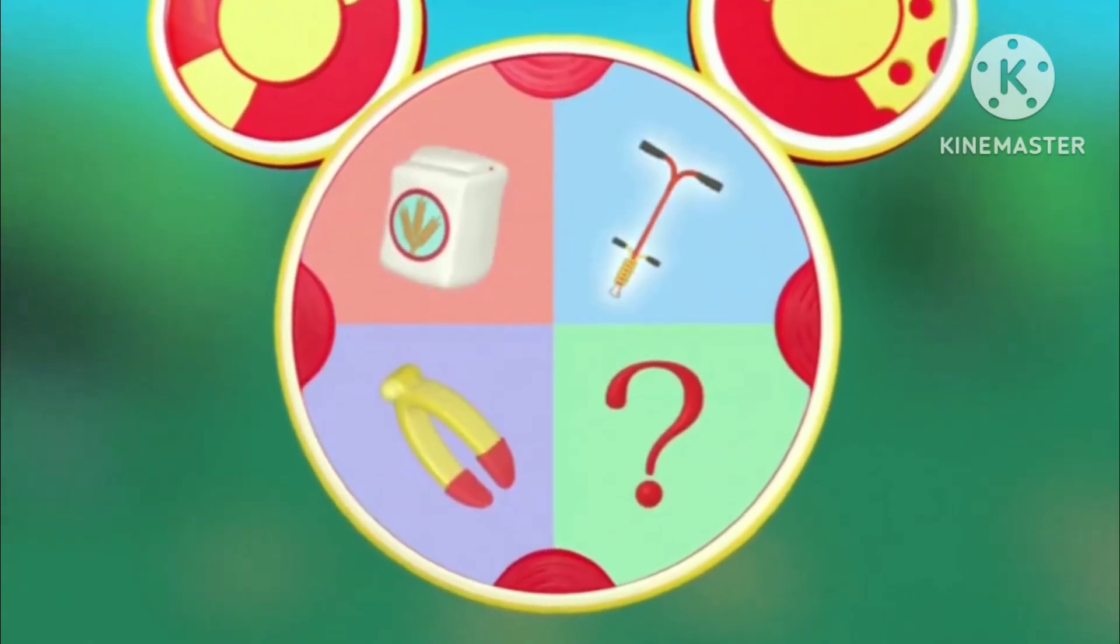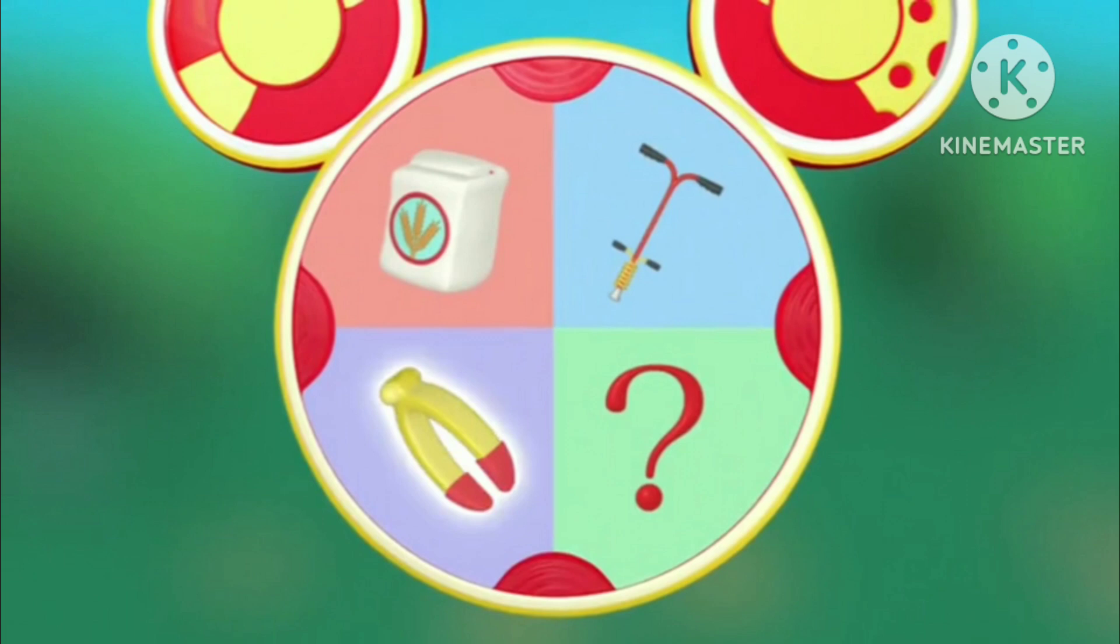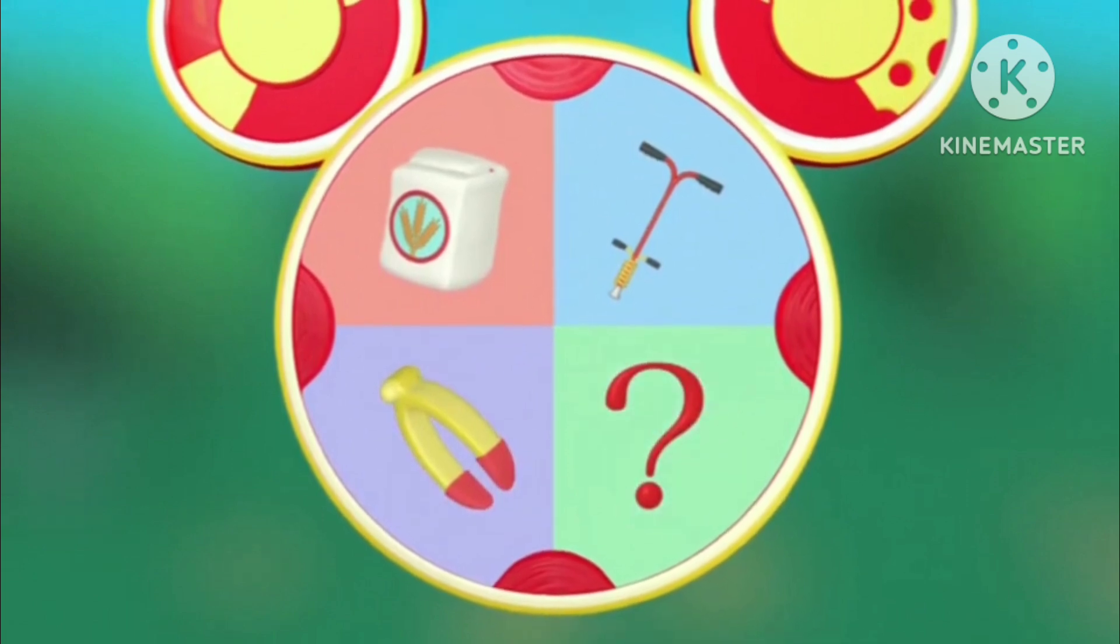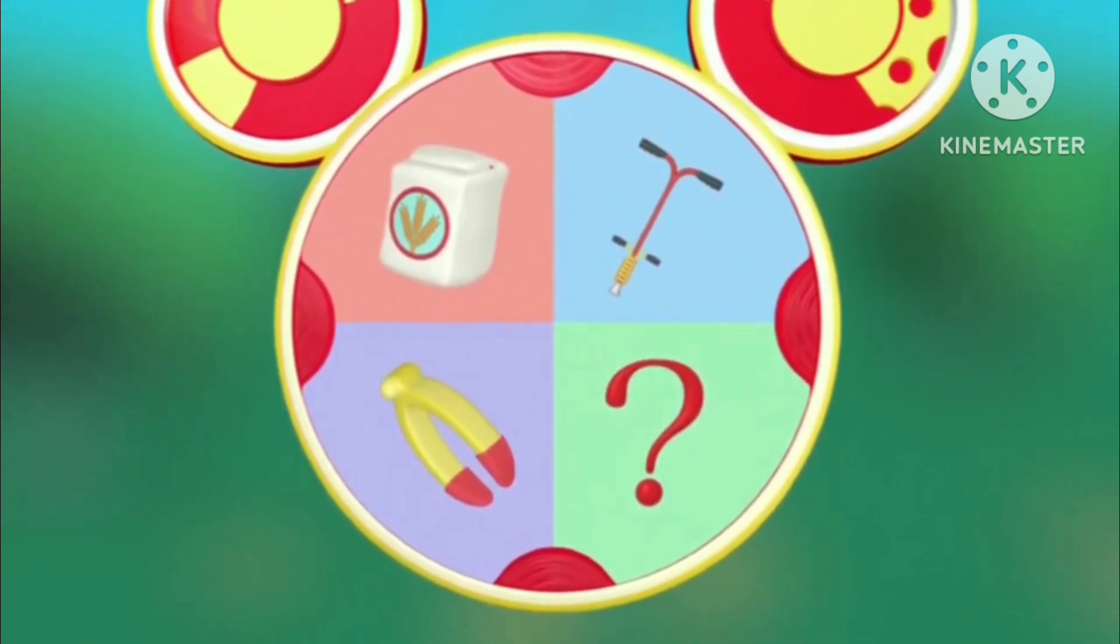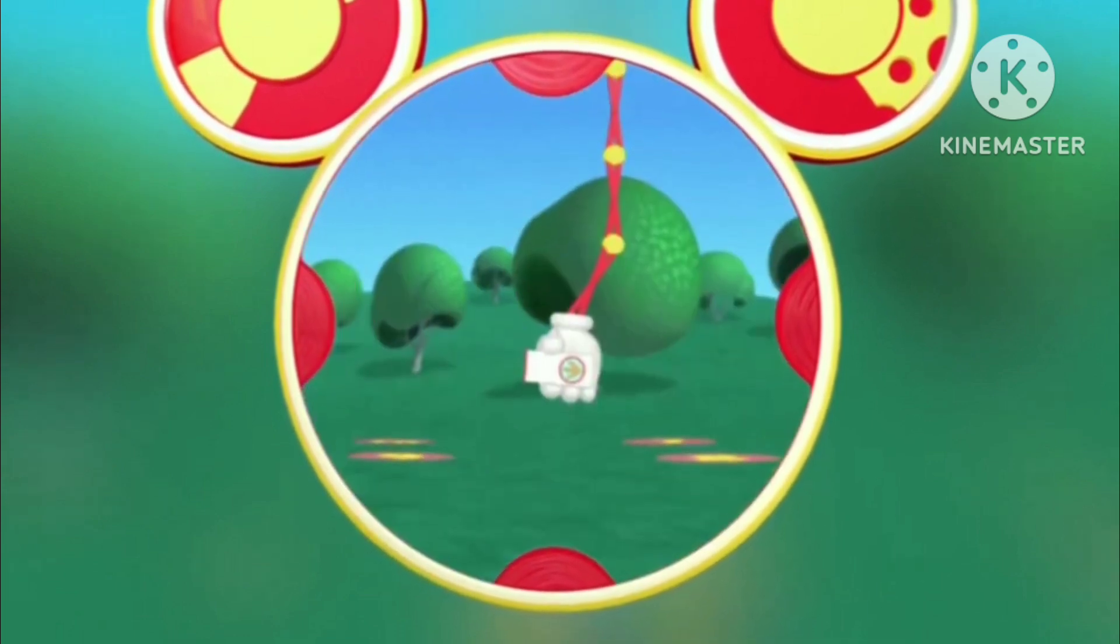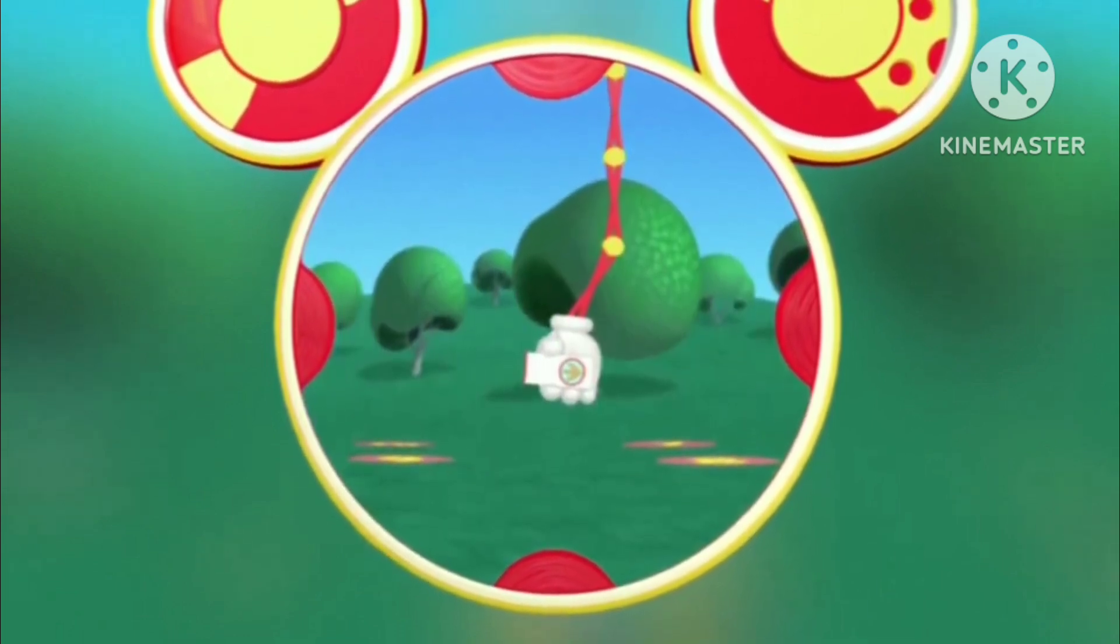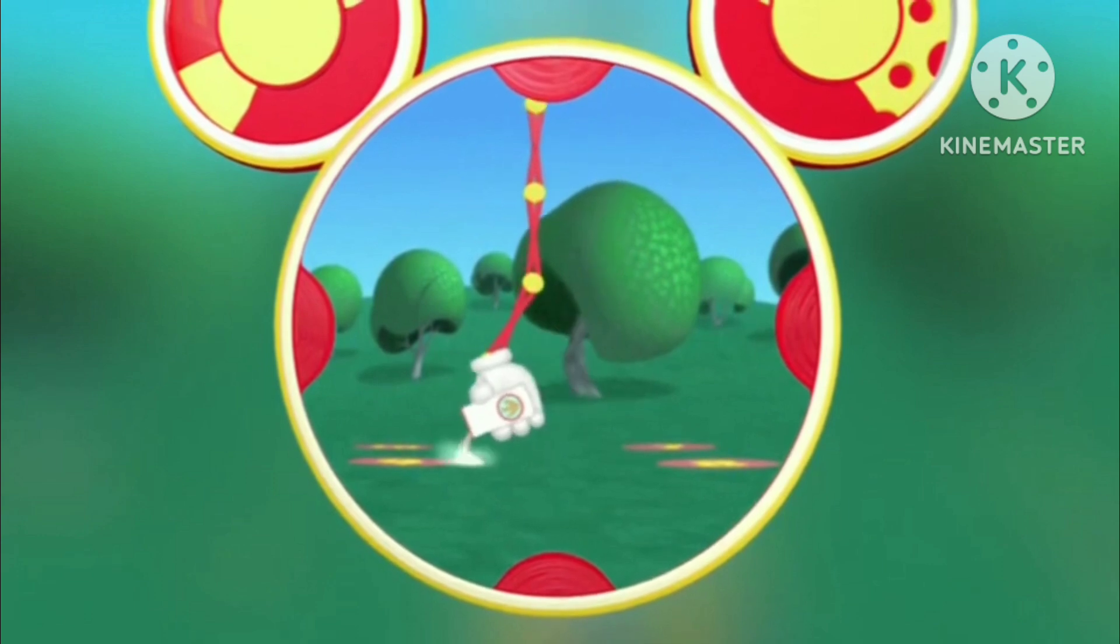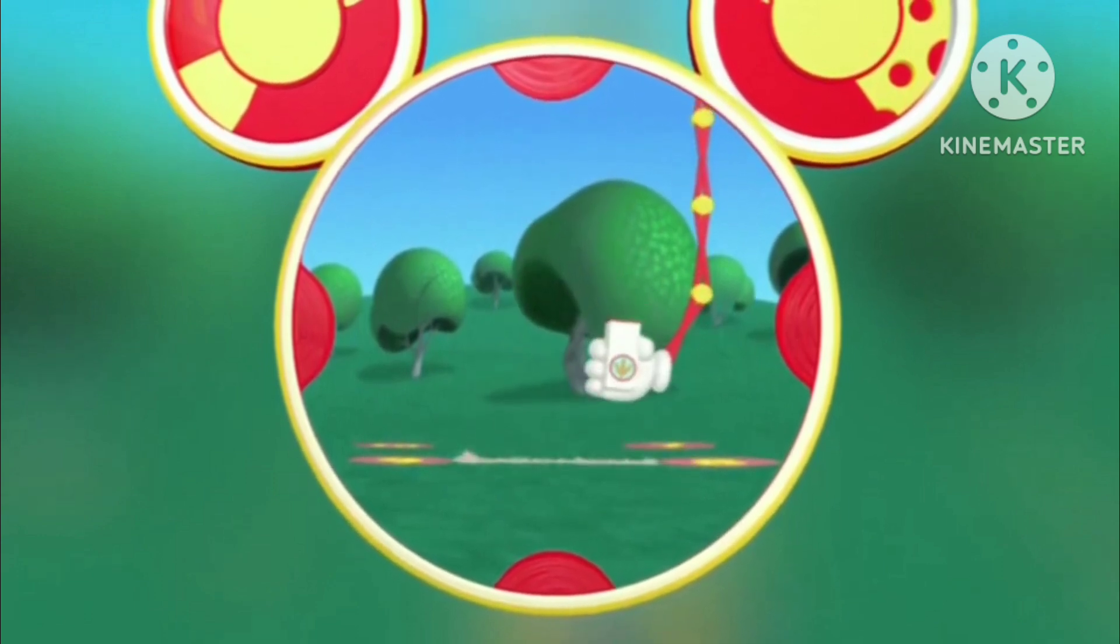We've got a bag of flour, a pogo stick, tweezers, and the mystery mouscatool. But what about using the flour? Yeah, if we pour flour on the ground from one dot to the next, we could connect the dots like we're drawing lines.